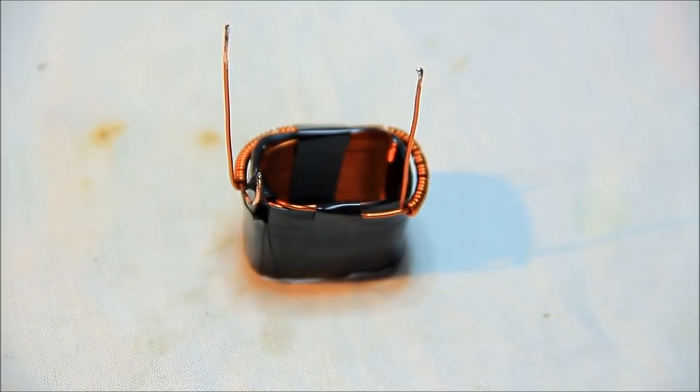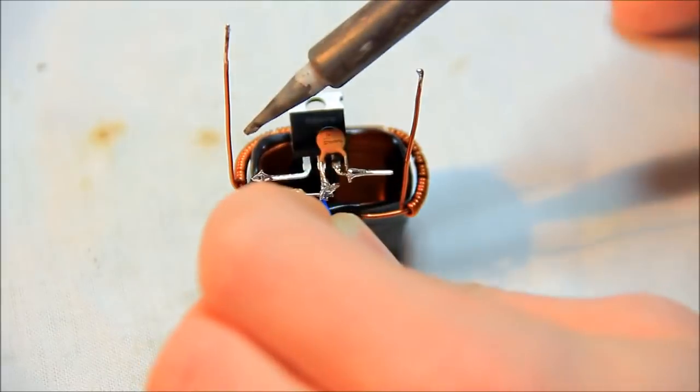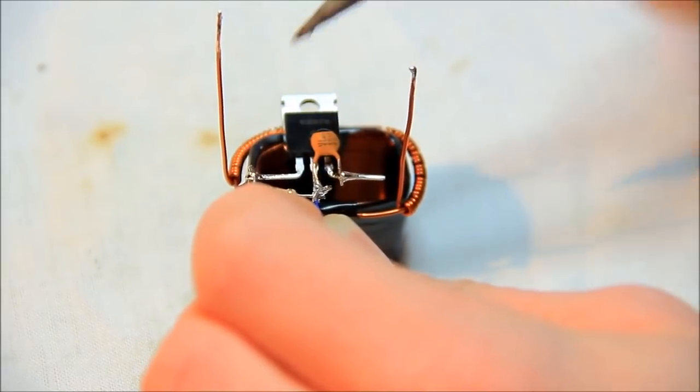Then we need our coil and we solder the end of the main coil on pin 1 of our transistor.